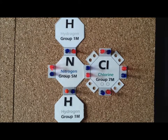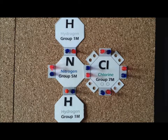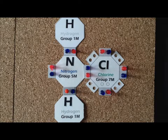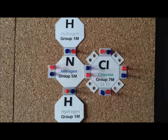Chloramine has the chemical formula NH₂Cl. We can think of it as ammonia where one of the hydrogen atoms has been replaced by a chlorine atom. In this compound, chlorine contributes seven valence electrons, nitrogen contributes five valence electrons, and each of the hydrogen atoms contributes one valence electron. Therefore, we have a total of 14 electrons in the system.